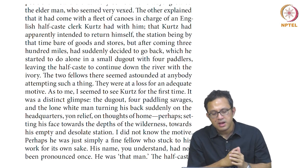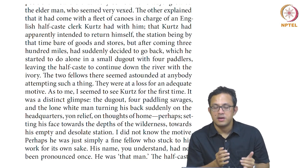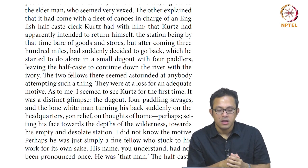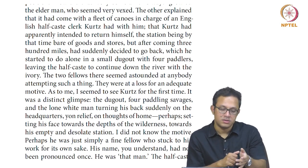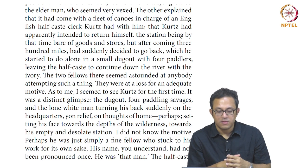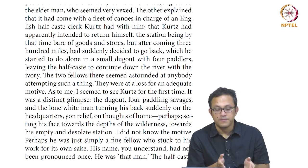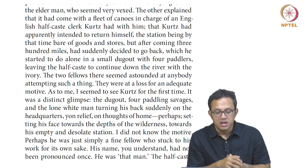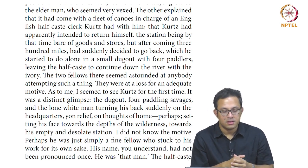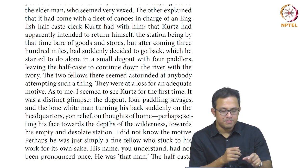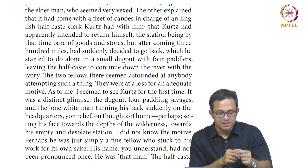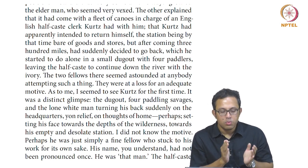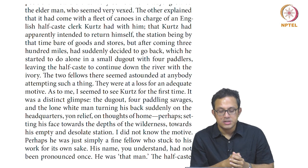Now let us look at the section where Marlow sees Kurtz for the first time. He narrates: 'As to me, I seemed to see Kurtz for the first time. It was a distinct glimpse — the dugout, four paddling savages, and a lone white man turning his back suddenly on the headquarters, leaving, setting his face towards the depths of the wilderness, towards this empty and desolate station.' This phrase — 'the lone white man turning his back suddenly on the headquarters' — is both a literal and physical description of Kurtz's movement and a symbolic one.